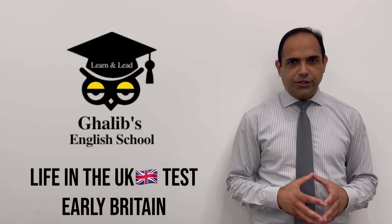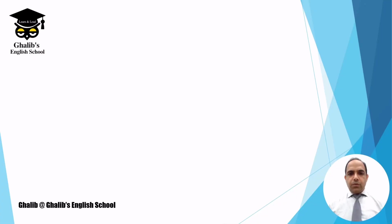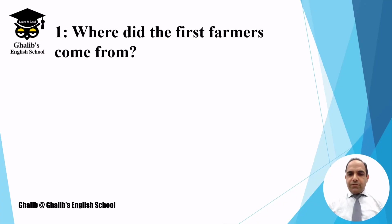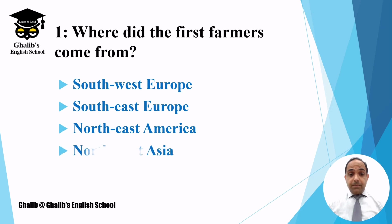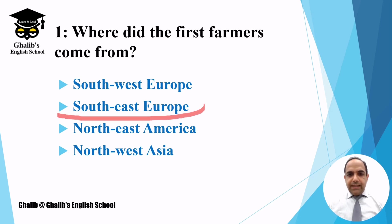Chapter 4 is all about British history. Question number one: where did the first farmers come from? The options are Southwest Europe, Southeast Europe, Northeast America, or Northwest Asia. The answer is Southeast Europe.